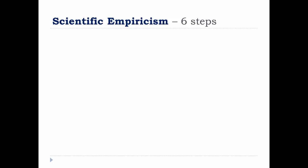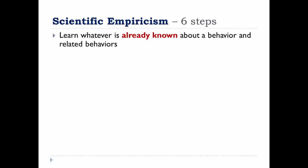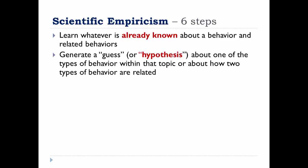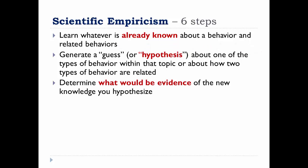This leads us to the six steps of scientific empiricism. First, you learn what is already out there. Then you will generate a guess about what you might find if you research the topic. These guesses would be hypotheses. For our purposes, we will broaden the term hypothesis to include research questions and study objectives. Next, determine how you will be able to assess if your hypothesis is correct. What would be considered by others to be appropriate evidence?